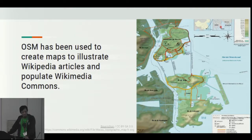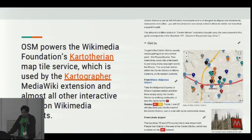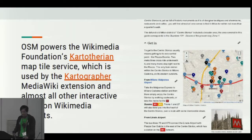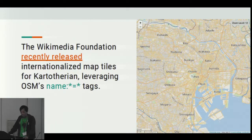Here you've got the coastline and road data used to generate an SVG map of Macau. Also, OSM powers the Wikimedia Foundation's map tile service, which is used by the Cartographer MediaWiki extension and almost all other interactive maps on Wikimedia projects. So basically, if you see an interactive map on a Wikimedia project, chances are it uses this plugin — it's extensively used in the Wikivoyage projects. The Wikimedia Foundation recently released internationalized map tiles for Kartotherian.